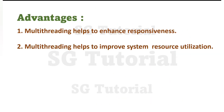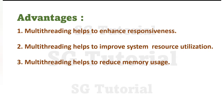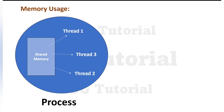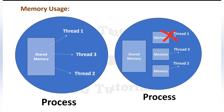Another advantage of multi-threading is that it helps to reduce memory usage. At the time of execution, the program loads into memory and the CPU executes it. Threads are sub-parts of a single program or process, so all threads share the same memory space of their parent process — each thread does not require its own separate memory allocation. Because of this, memory is used effectively in multi-threading, and less overall memory is consumed.